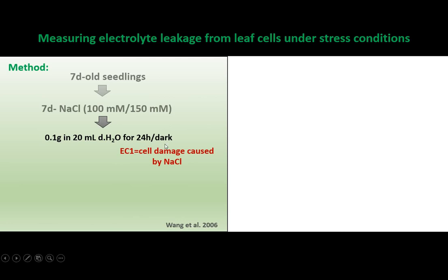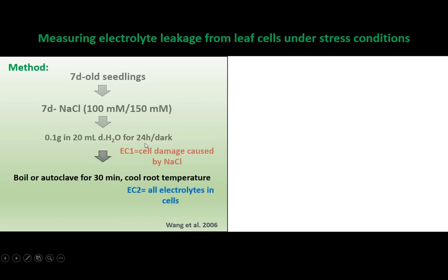We keep these samples in the dark because if kept under light, more ROS can be produced, causing additional damage to the leaves. Next, boil or autoclave these samples in the same solution used for the previous measurement, then cool to room temperature. Take the EC2 or second reading — boiling or autoclaving damages all cell membranes, so EC2 represents electrolyte leakage from all cells.